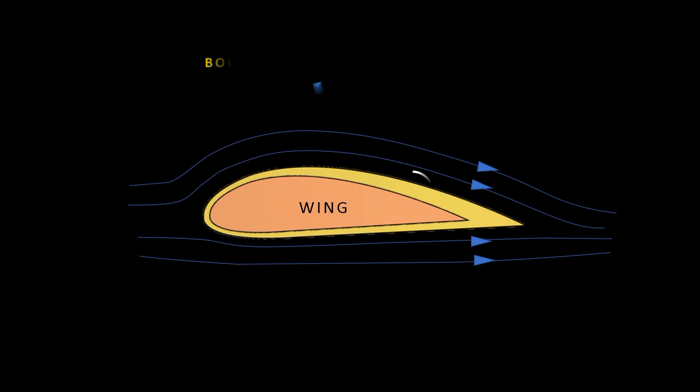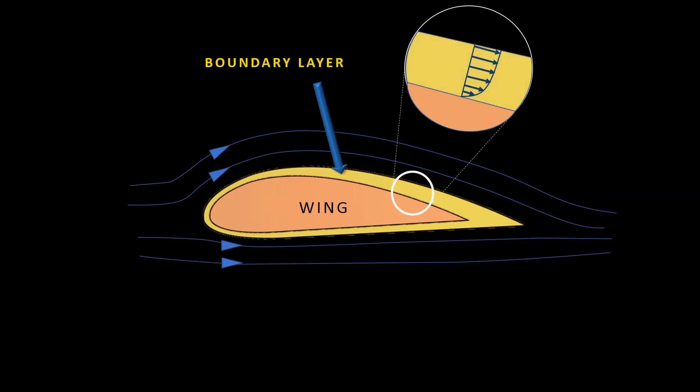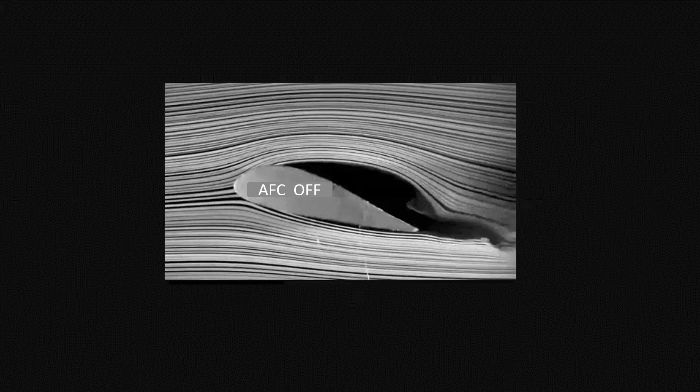But active flow control's impact goes beyond maneuverability. By actively managing the boundary layer, which is the thin layer of air adjacent to the aircraft surface, AFC can also be used to reduce drag and enhance fuel efficiency. And how this happens? Let's see in detail.